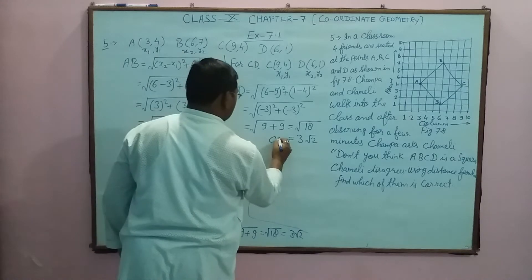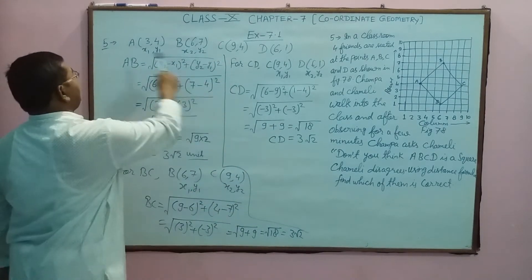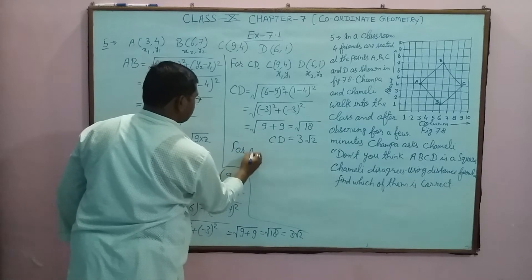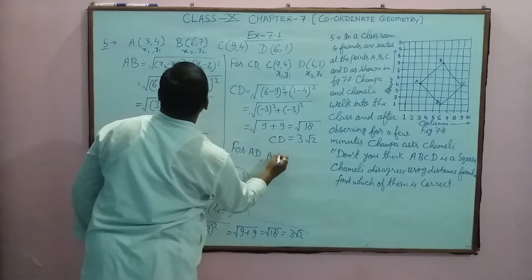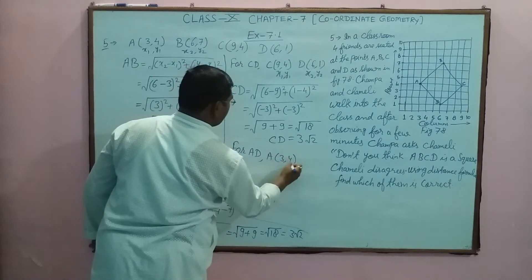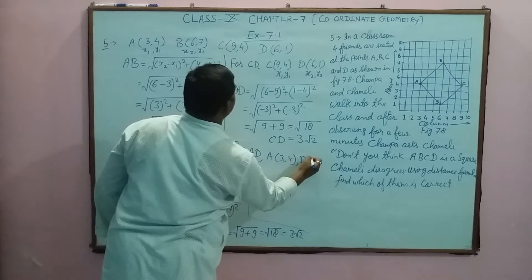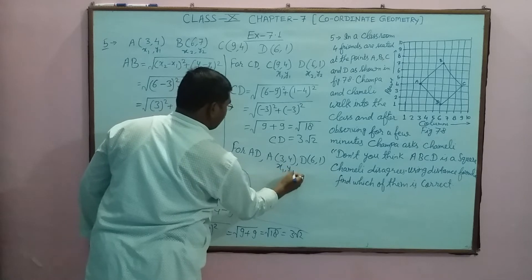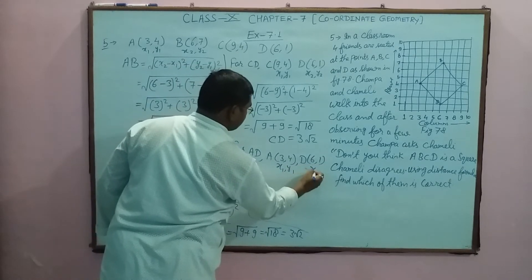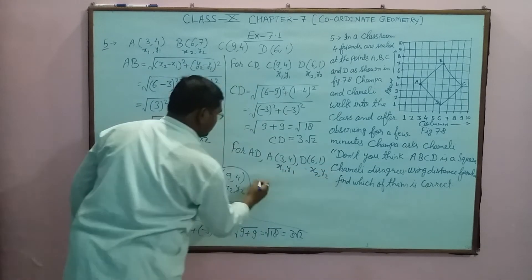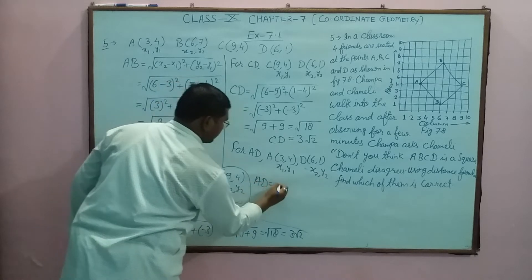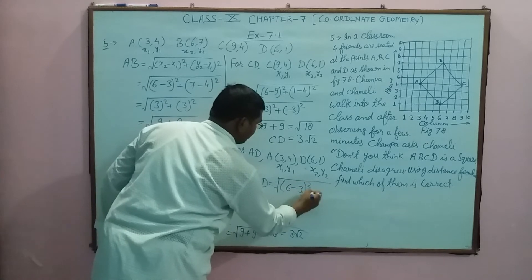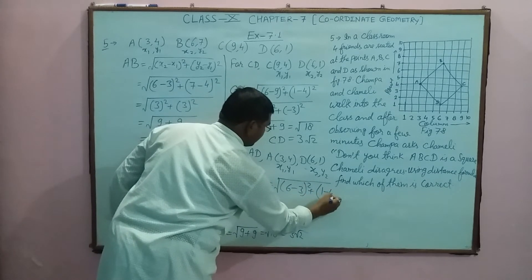Now find AD. For AD, A's coordinate is (3,4), D's coordinate is (6,1). Again x1, y1 and x2, y2. So AD, again distance formula: square root of x2 is 6, x1 is 3, square, plus y2 is 1, y1 is 4, square of this.